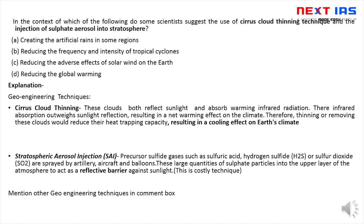अगले question में: cirrus cloud thinning technique और injection of sulfate aerosol into stratosphere — ये किससे related हैं? Options: tropical cyclone, solar wind, या global warming? ये geoengineering techniques हैं — climate change handle करने के लिए, global warming को minimize करने के लिए। So correct option is D. Cirrus cloud thinning में: cirrus clouds infrared radiation को absorb करते हैं। इनकी thinning करने से absorption कम होगी, warming effect कम होगा — cooling effect का काम करते हैं।